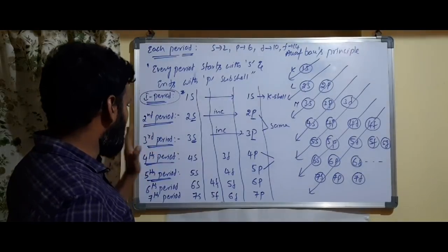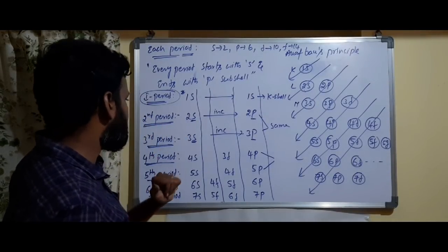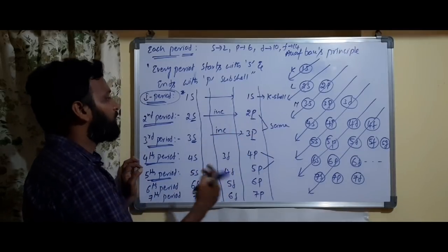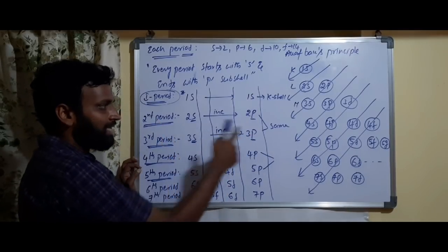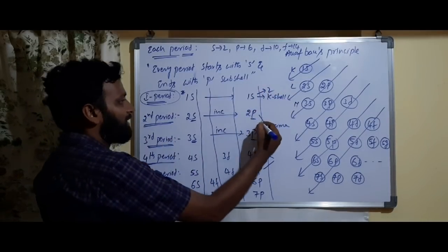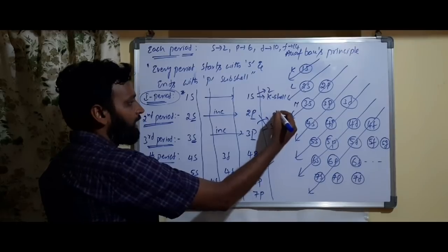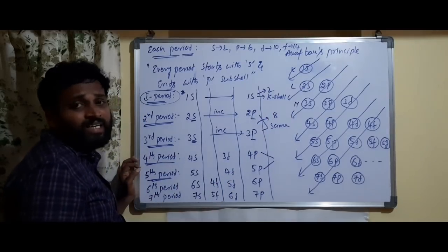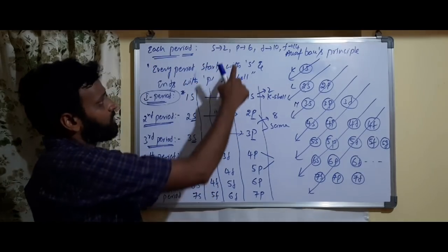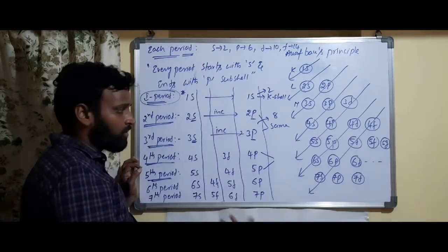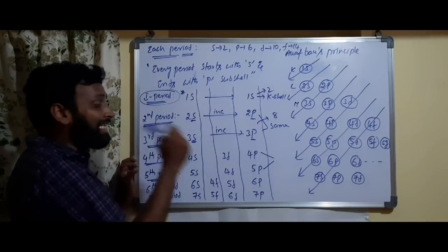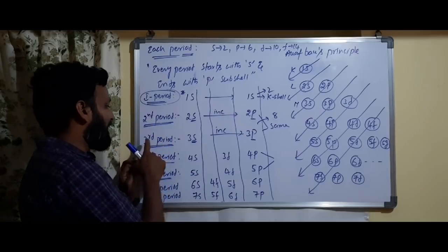So all periods follow this pattern. First period: 2 elements (1s only). Second and third periods: 8 elements each (S + P = 2 + 6 = 8 electrons, so 8 elements). Second period starts with 2s¹ (lithium) and ends with 2p⁶ (neon). Third period starts with 3s and ends with 3p, also 8 elements.